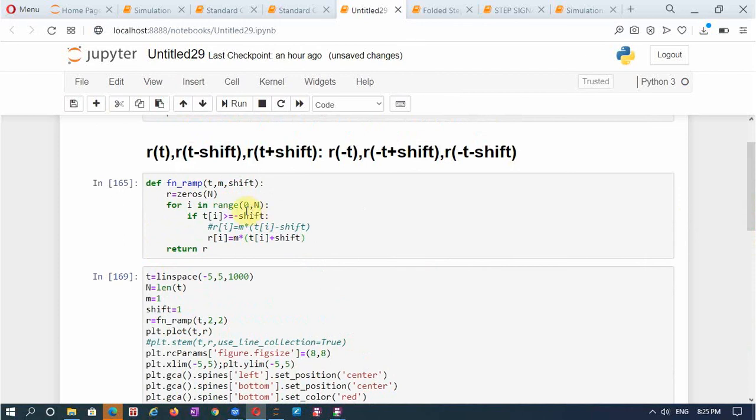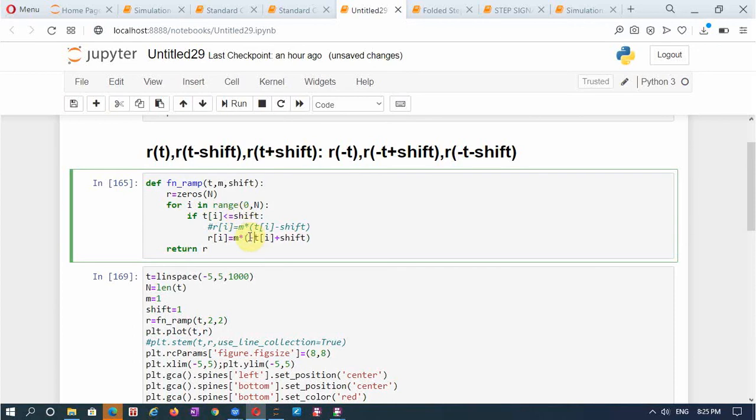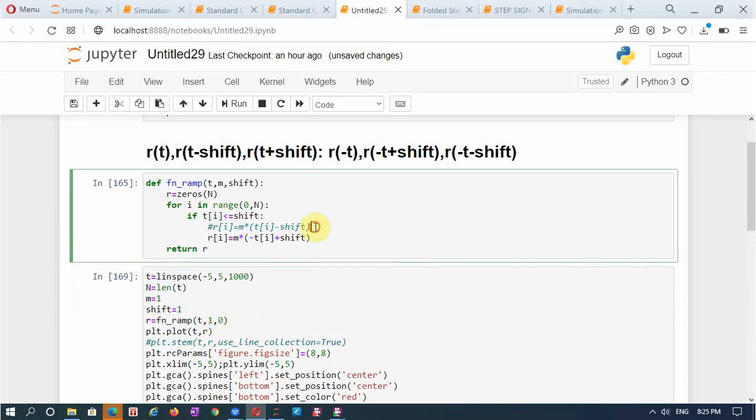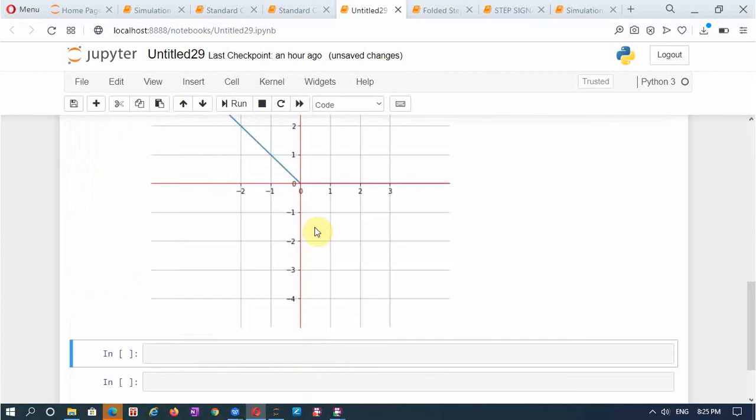Now let me make the changes for the folded signal. Make this negative and remove this sign here and put a negative sign for this to fold it. Let me first generate a unit ramp which is folded. Slope is equal to 1 and shift is 0. Let me run this cell first and then this.